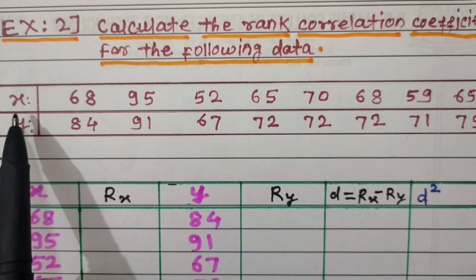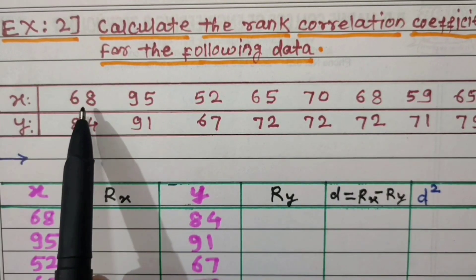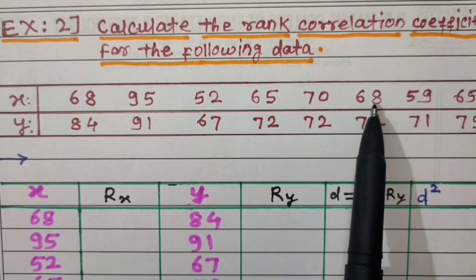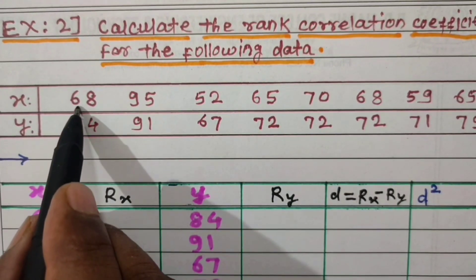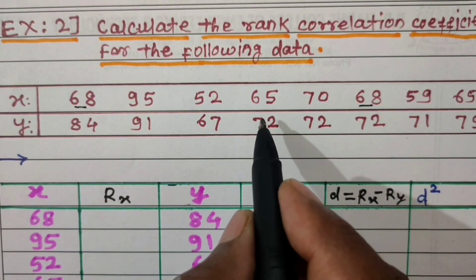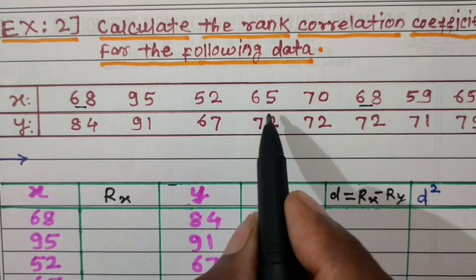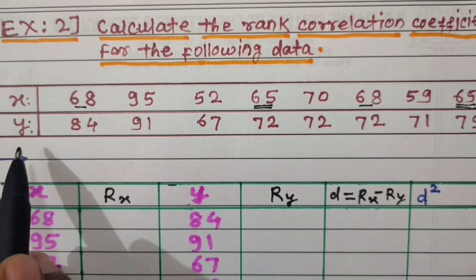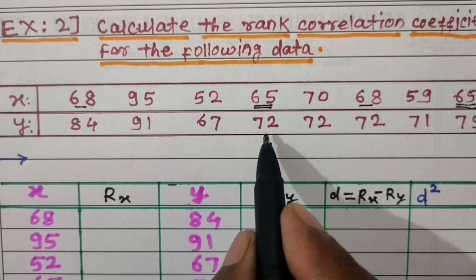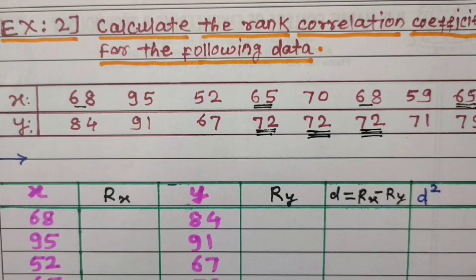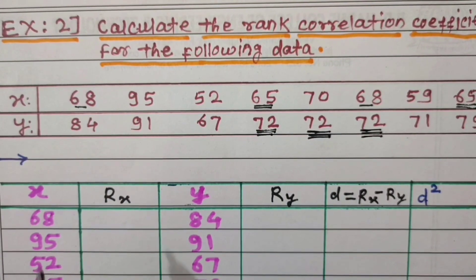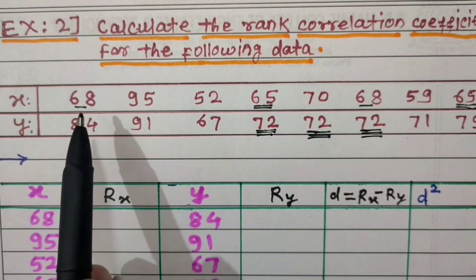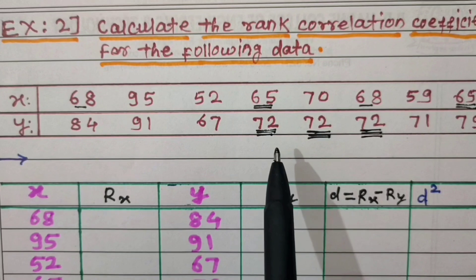In values of variable x, 68 is repeated 2 times and 65 is also repeated 2 times. In values of variable y, 72 is repeated 3 times. So these three values are repeated, and we need to find correction factors for 68, 65, and 72.